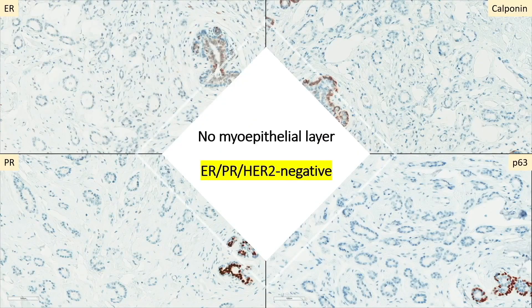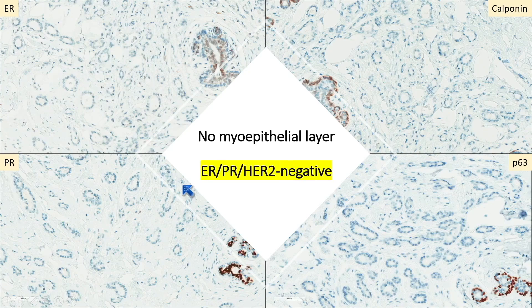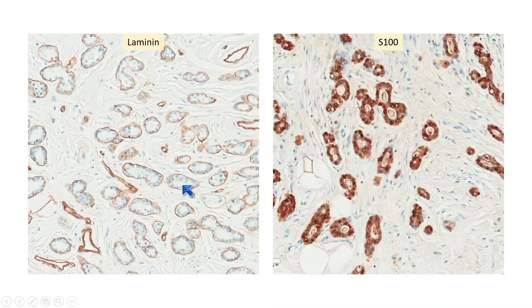This case came with a diagnosis of invasive carcinoma. The glandular proliferation does not have a peripheral myoepithelial layer surrounding the glands, and it is triple negative. Here are ER and PR with proper internal controls. If a diagnosis of invasive carcinoma is considered with this well-differentiated morphology and triple negative status, this is discordant. So we did more stains.